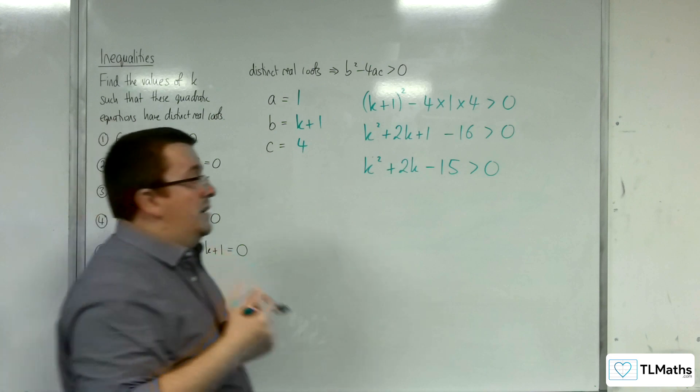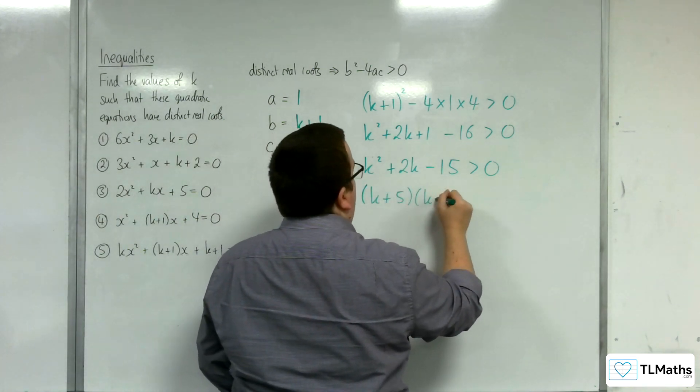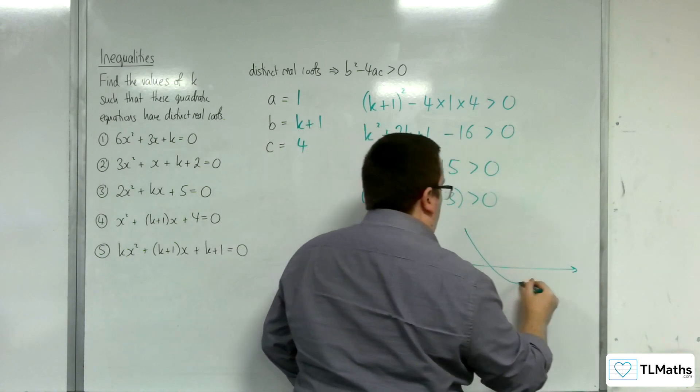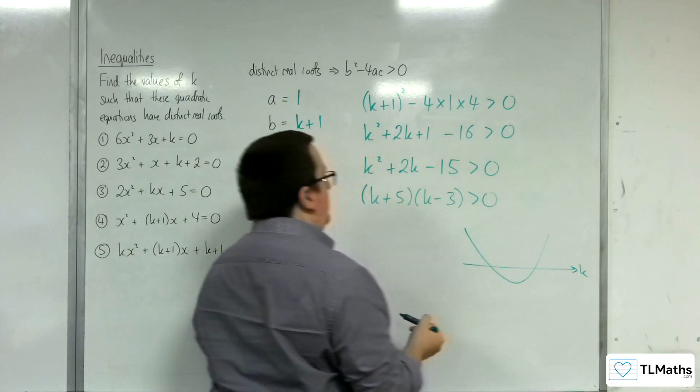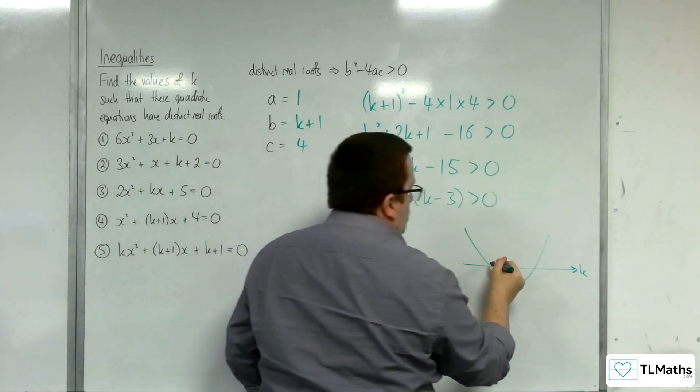That can be factorised. That is k plus 5, k minus 3. Let's draw this diagram. Here's my parabola, getting on the k-axis. This is a parabola that goes through minus 5 and 3.